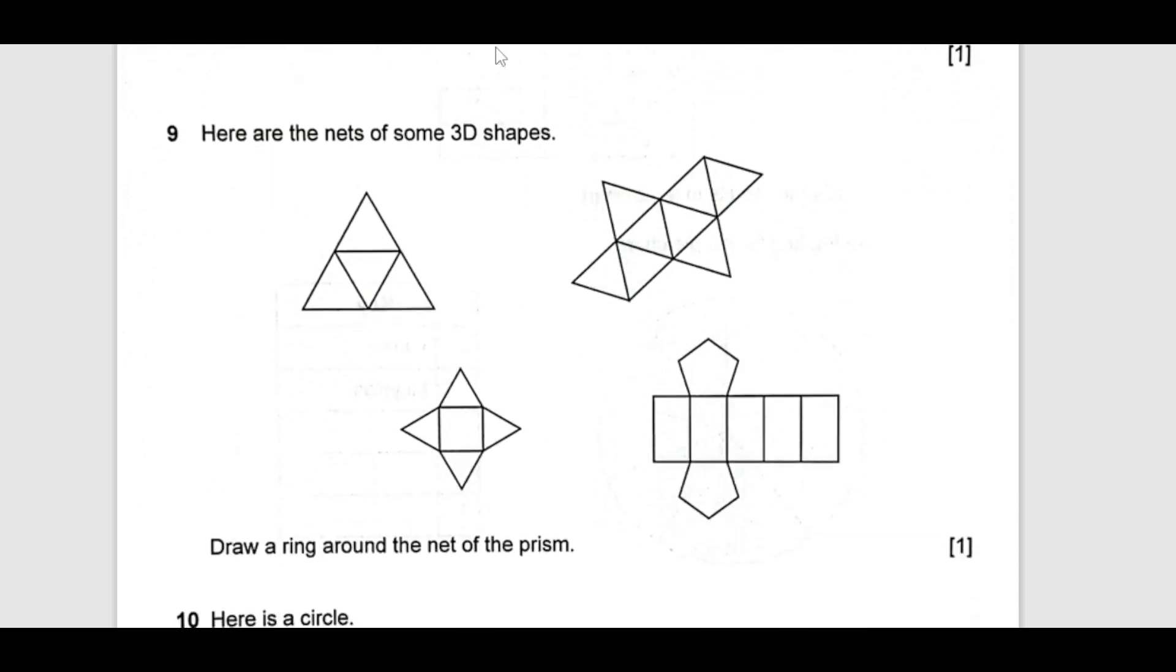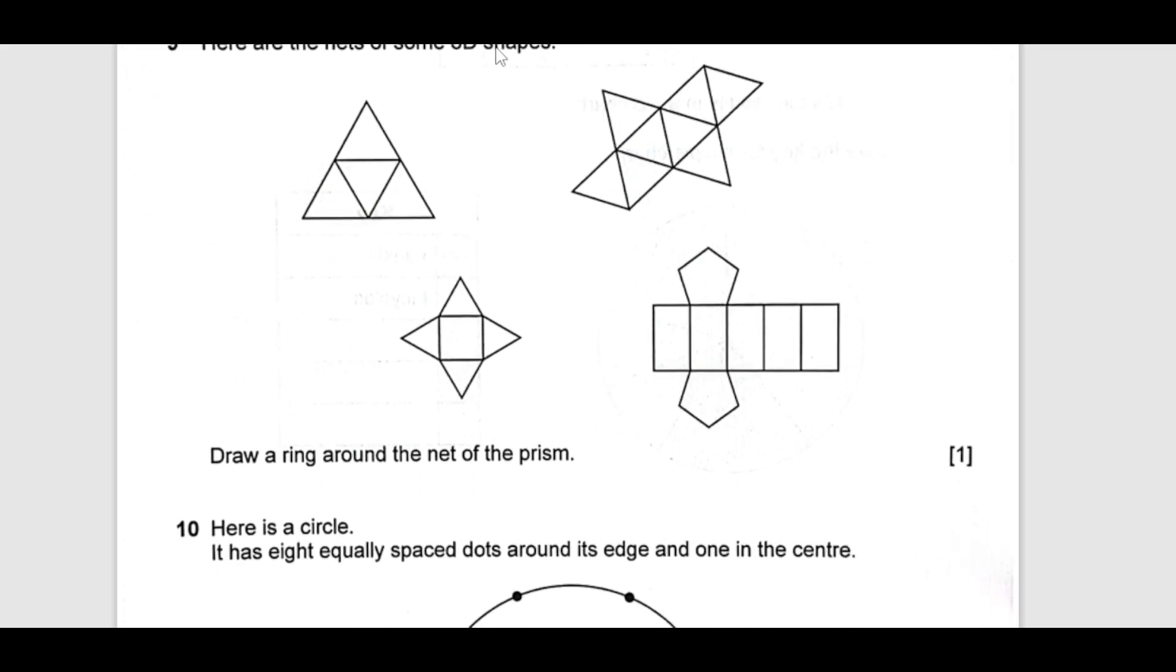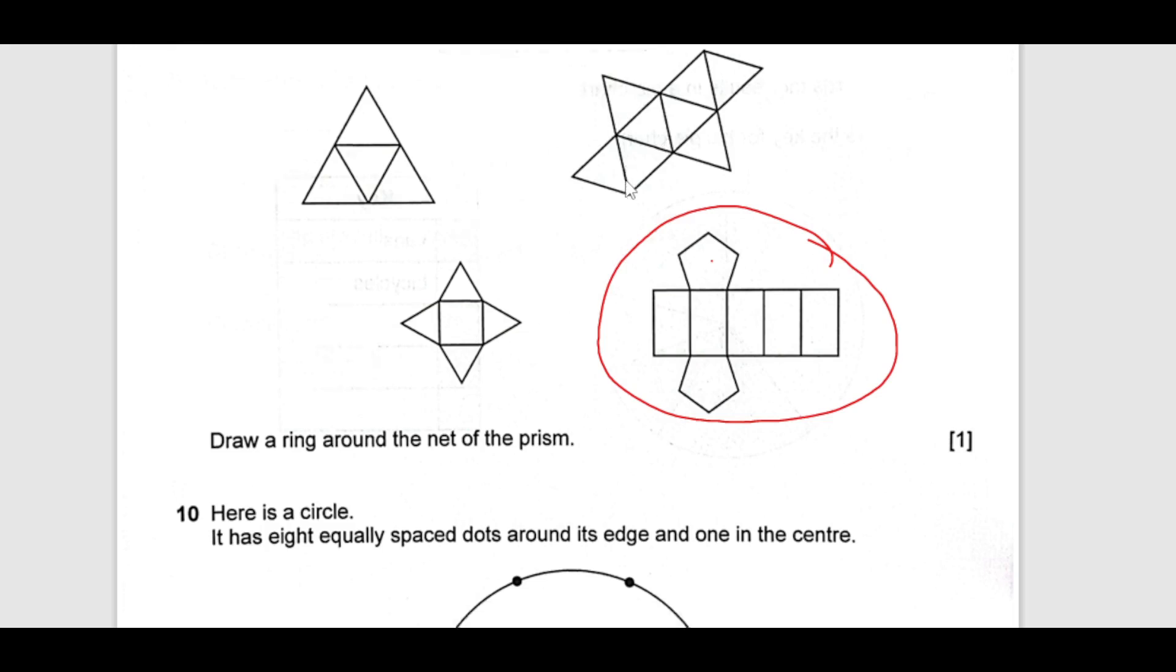Now, number 9. Here are the net of some 3D shapes. You can see the net of the 3D shape here. Draw a ring around the net of the prism. Prism have two parallel sides same. This and this you can see. This is the prism here. This is a pyramid. This is not prism actually. We have all the triangles here. This is the prism here.